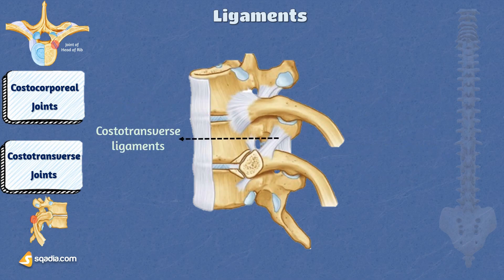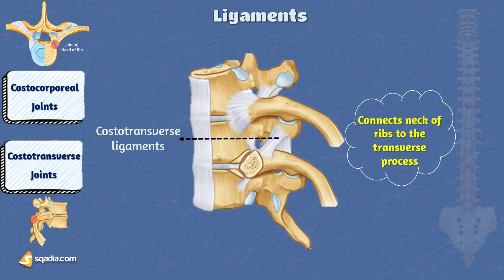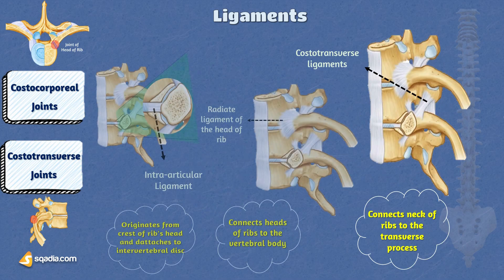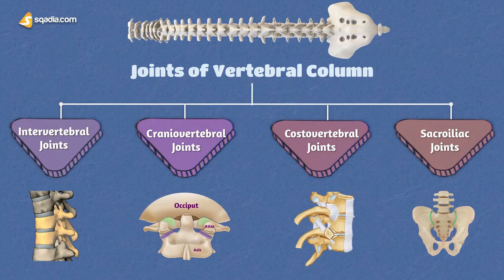As for the costo-transverse ligaments, their main function is to stabilize the costo-transverse joints. The costo-transverse ligament attaches the neck of the rib to the transverse process, filling the costo-transverse foramen between the rib's neck and its adjacent transverse process. Together, these ligaments work in harmony to ensure the proper alignment and stability of the costovertebral joints, allowing for controlled movements of the ribs during breathing and other activities. That is all about the costovertebral joints — now you know their importance and how the flexibility of the vertebral column plays a role in the mechanism of breathing.